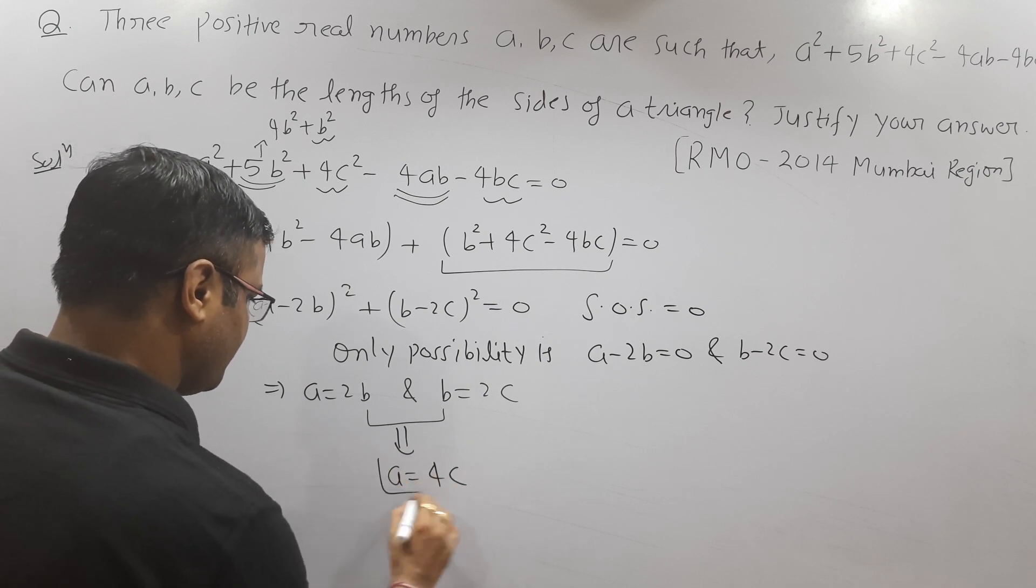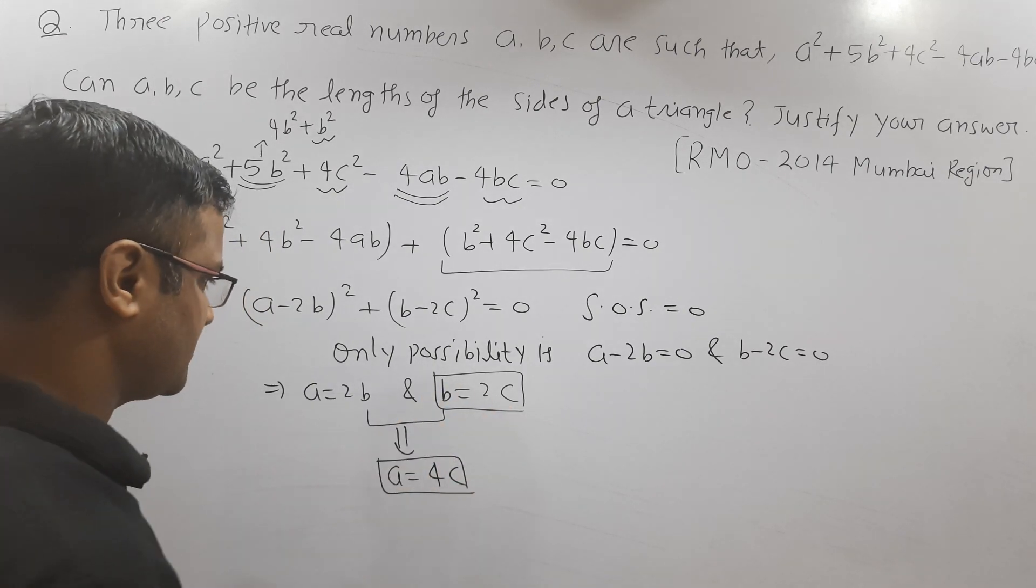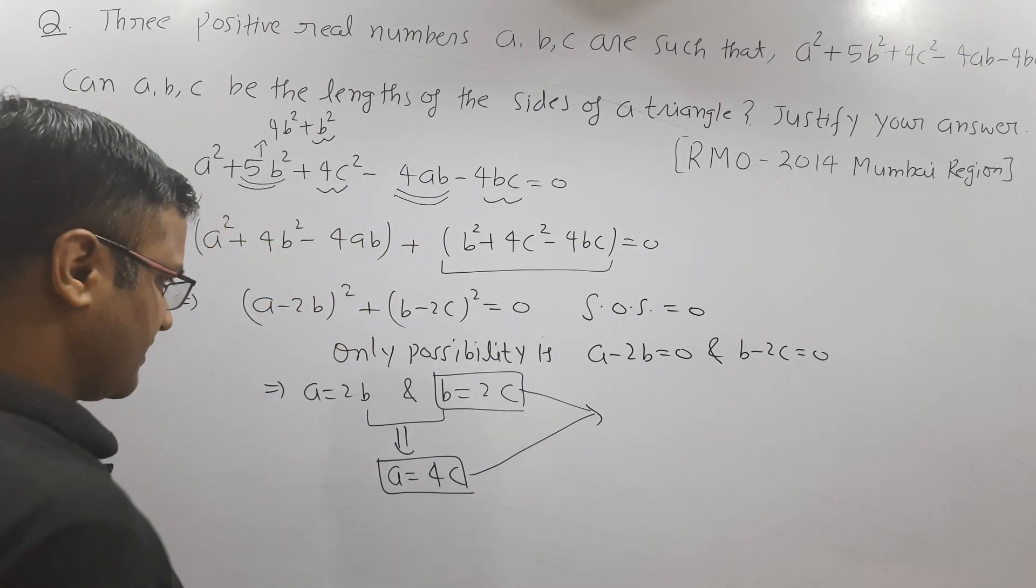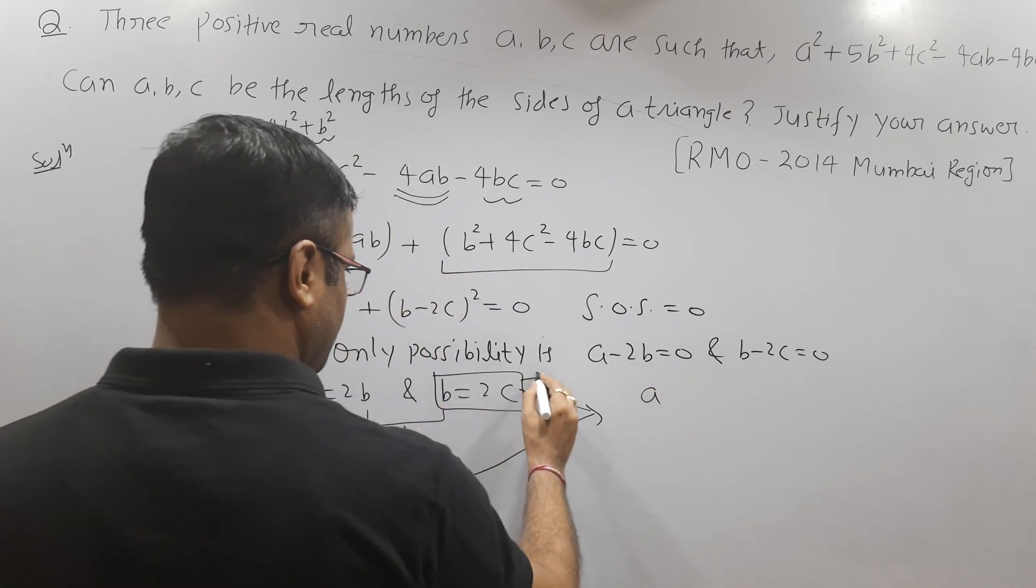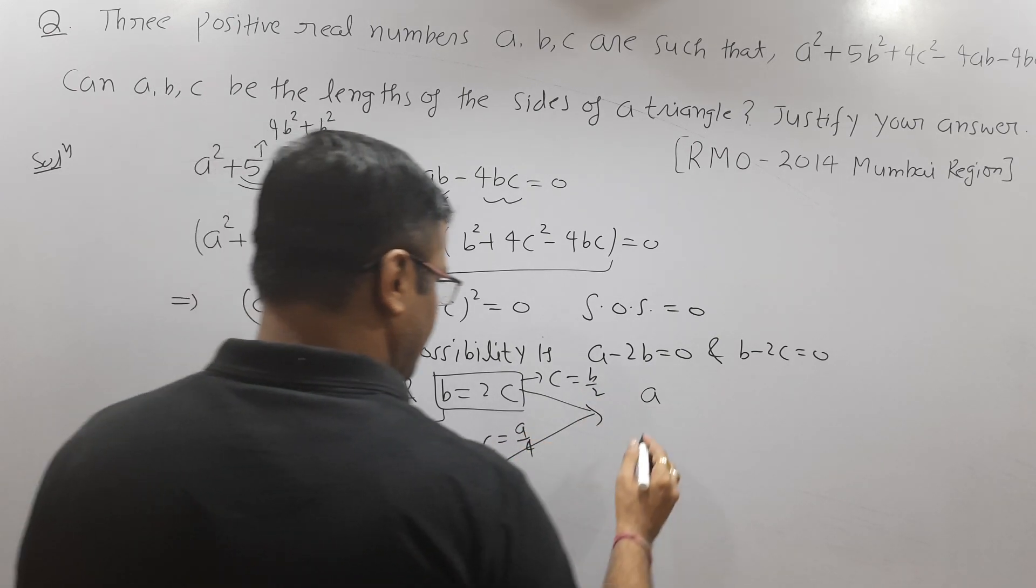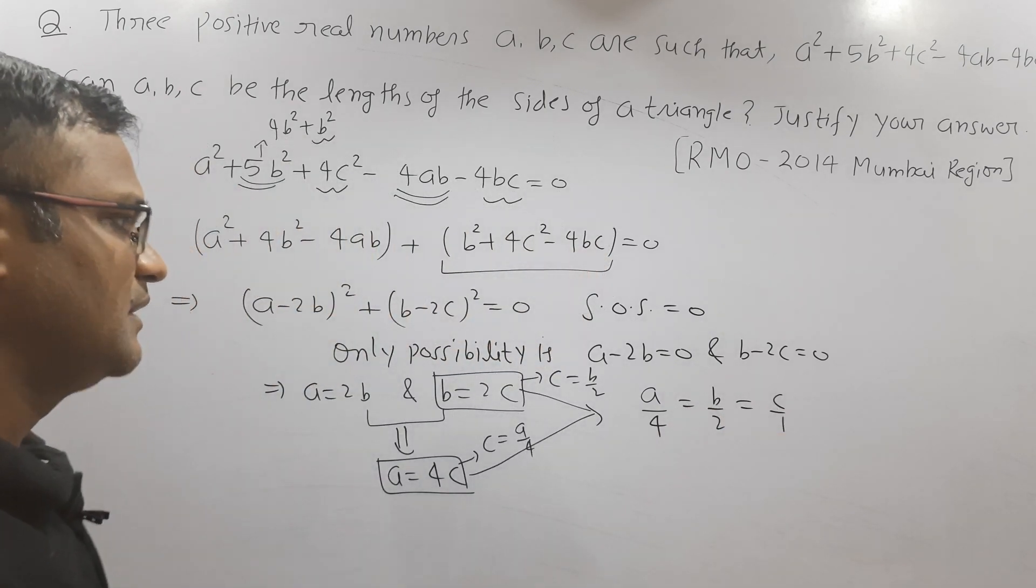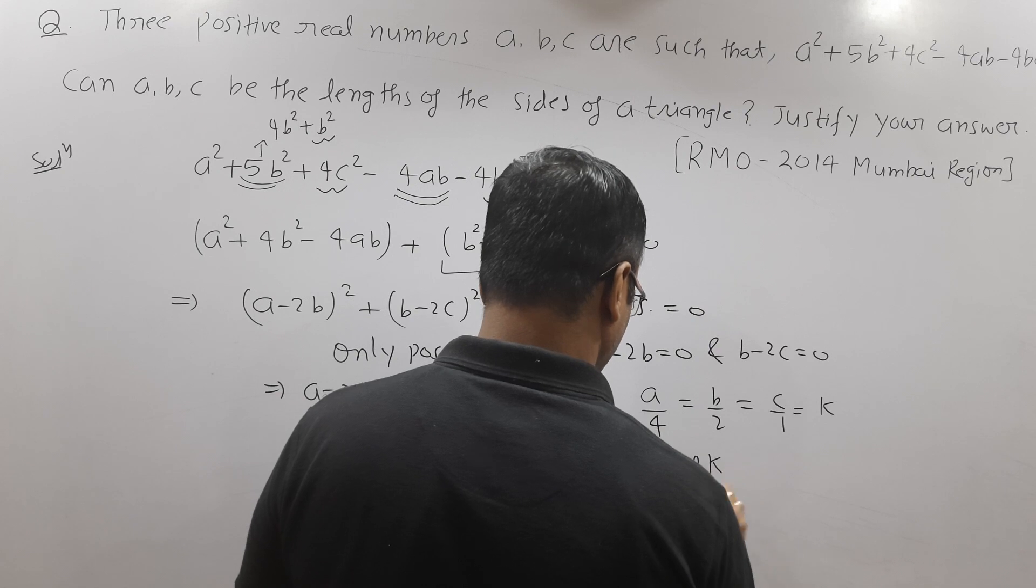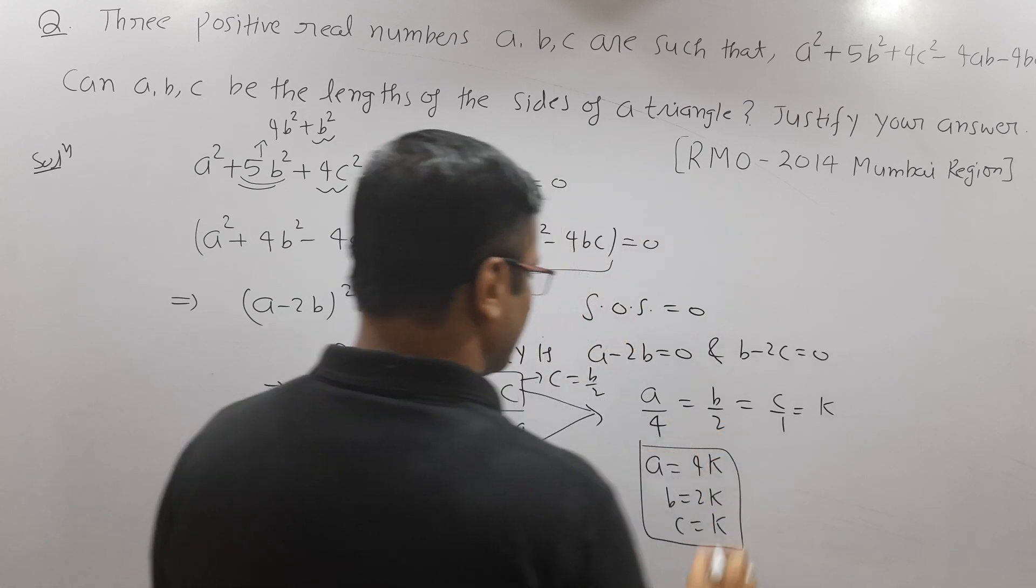With the help of these two relations, since c is connected to b and c is connected to a, we can write c = b/2 and c = a/4. So a/4 = b/2 = c/1. If we suppose each ratio equals k, then a = 4k, b = 2k, and c = k. So the side lengths are in the ratio 4:2:1.